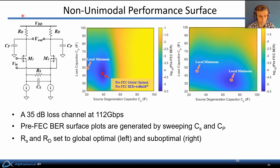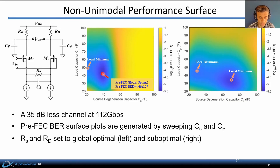Here we're considering the optimization of CTLE passive component values to minimize pre-FEC bit error rate for a 35 dB loss channel at 112 gigabits per second. An interesting phenomenon arises: even if you were to use a conventional gradient-descent method to minimize bit error rate, you can get trapped in a local minimum. For example, starting from an initial condition in one region and adapting equalizer parameters might lead you to one combination of capacitor values, whereas a lower bit error rate is available elsewhere — but you might never explore that part of the performance surface unless you use a sophisticated global optimization engine. This so-called non-unimodal performance surface arises in general when adapting both the poles and zeros of components in the signal path.